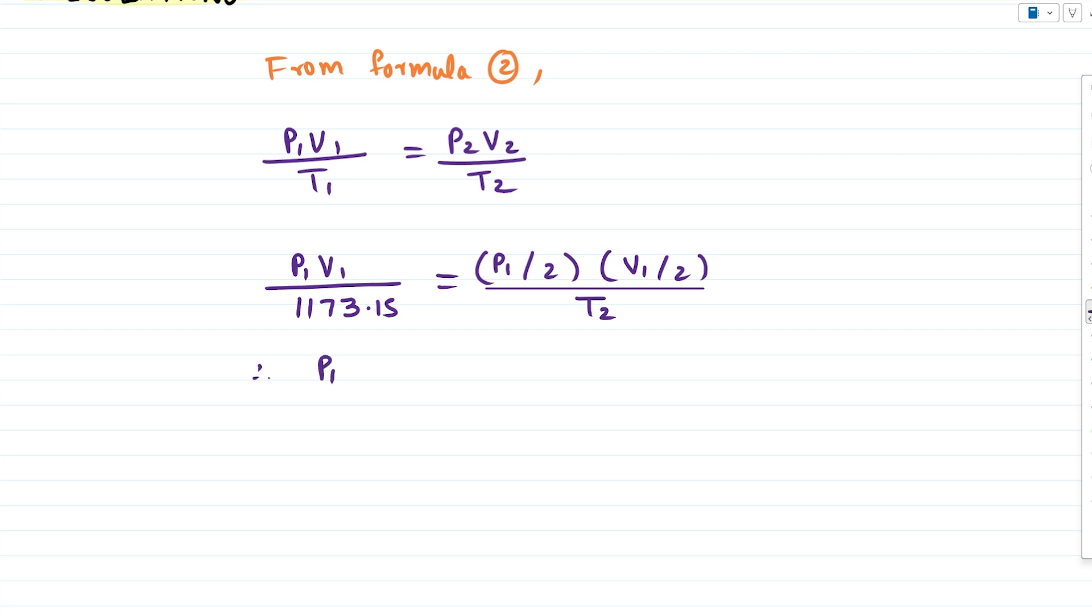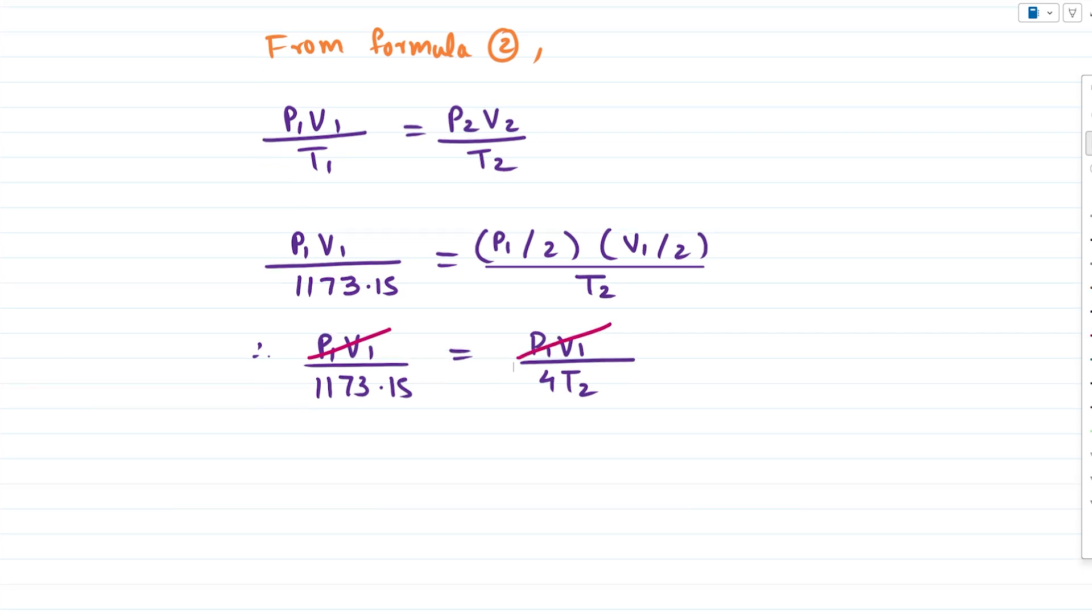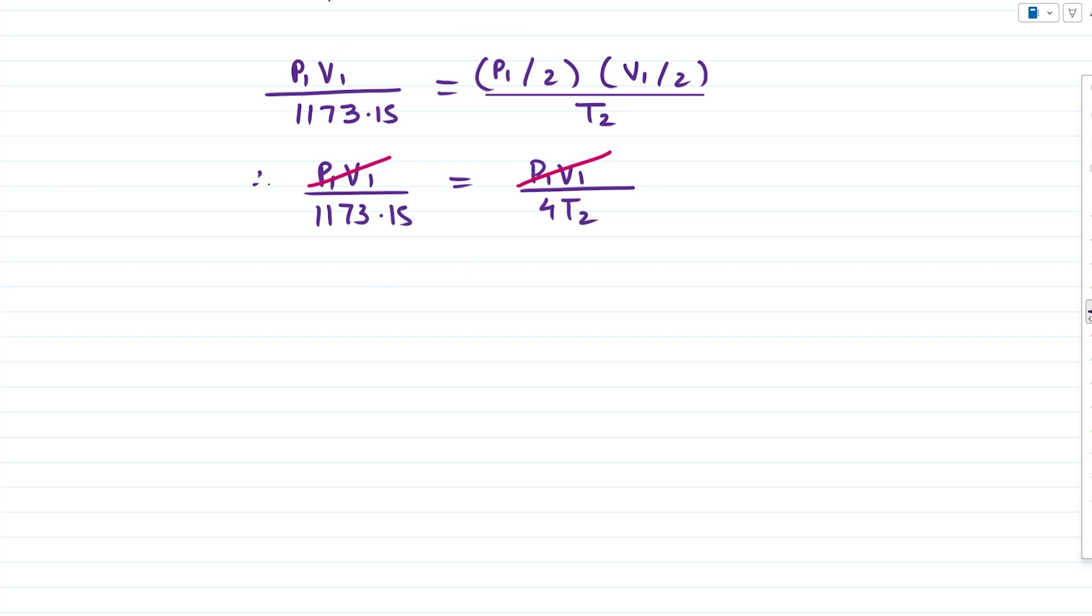Simplifying: P1 V1 over 1173.15 equals P1 V1 over 4T2. We can cancel P1 V1 on both sides. Rearranging, T2 equals 1173.15 divided by 4, which gives us 293.29 Kelvin. This is the final temperature of the gas when the volume and pressure are exactly half.